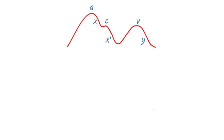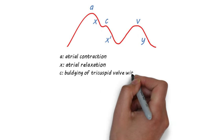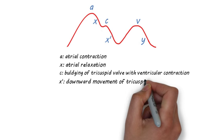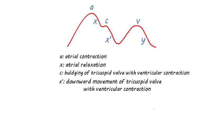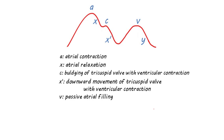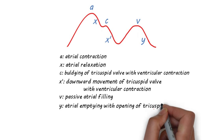To review, A corresponds to atrial contraction. X corresponds to atrial relaxation. C corresponds to the bulging of the tricuspid valve with ventricular contraction. X' corresponds to the downward movement of the tricuspid valve with ventricular contraction. V corresponds with passive atrial filling. And Y corresponds with atrial emptying with opening of the tricuspid valve.